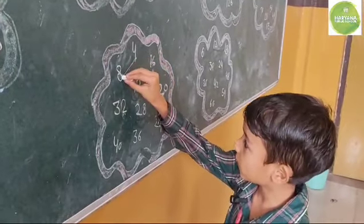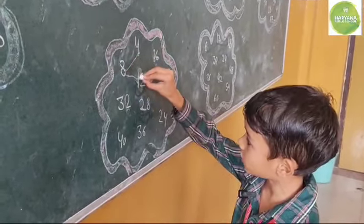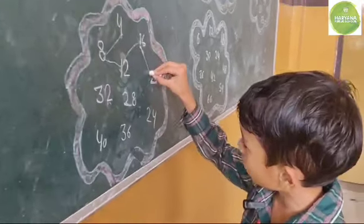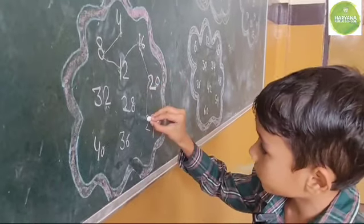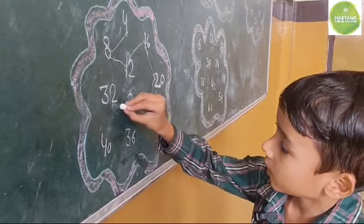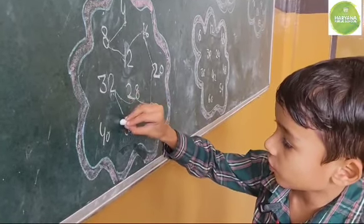4 times 1 is 4, 4 times 2 is 8, 4 times 3 is 12, 4 times 4 is 16, 4 times 5 is 20, 4 times 6 is 24, 4 times 7 is 28, 4 times 8 is 32, 4 times 9 is 36, 4 times 10 is 40.